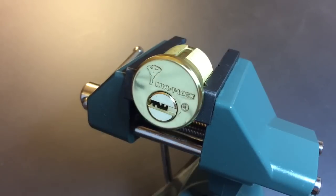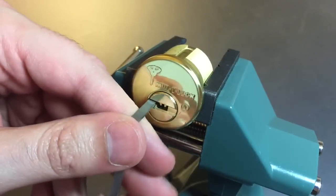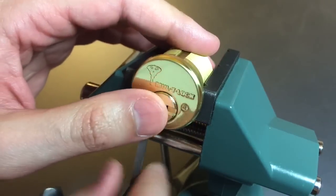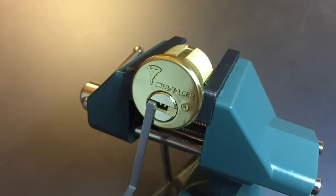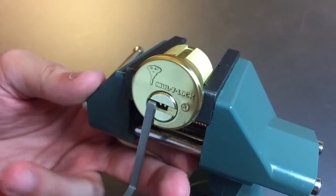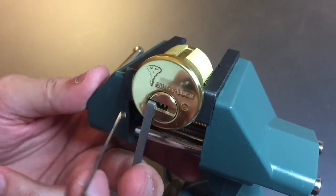Not so with the classic. With the classic any pin can be set at any height, and so it adds a little bit more uncertainty to it. So let's try to pick this guy open, then I'll take it apart and show you what's inside.